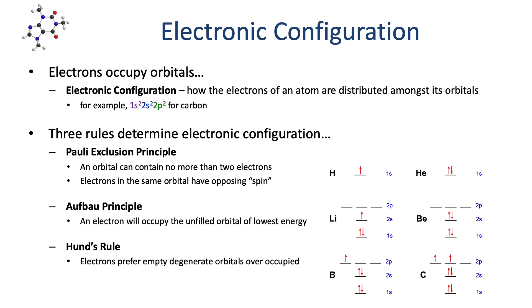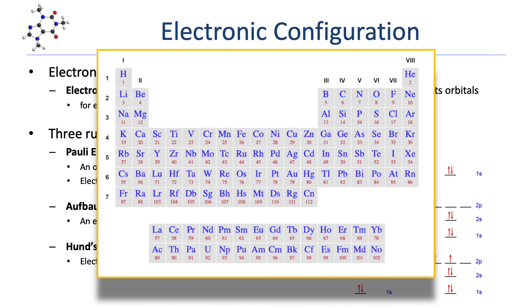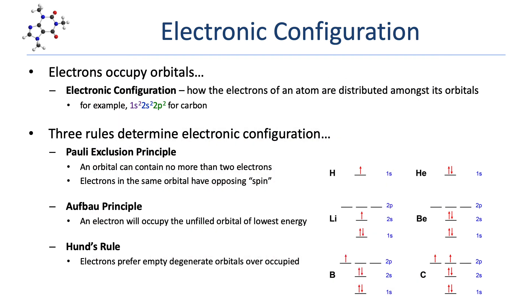The second rule is the Aufbau principle, which says that an electron will always occupy the unfilled orbital of lowest energy. With lithium and beryllium, we now have both first and second shell orbitals — five orbitals total. Lithium has an atomic number of three, so three electrons. The Aufbau principle says to start at the lowest energy orbital: place the first two electrons into the 1S orbital, and since Pauli limits us to two electrons per orbital, the third electron must go into the next lowest energy orbital — the 2S orbital.